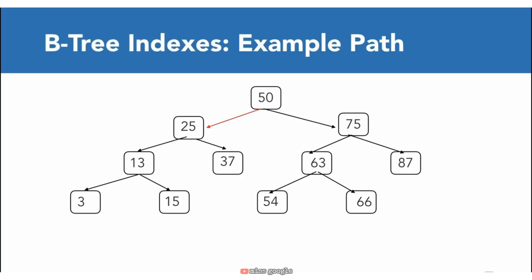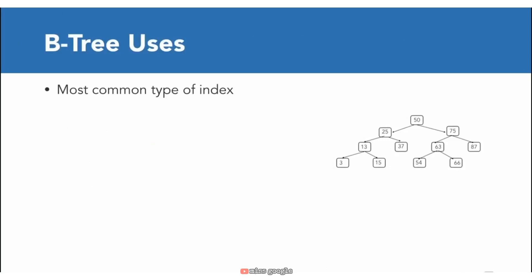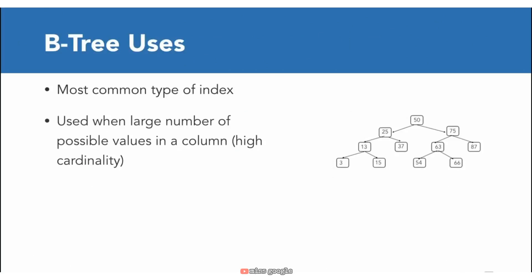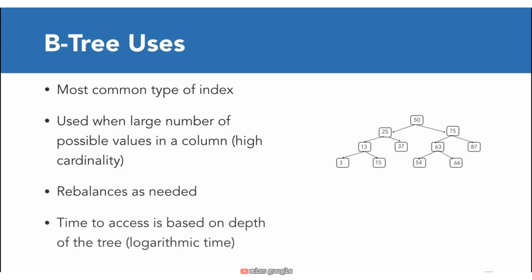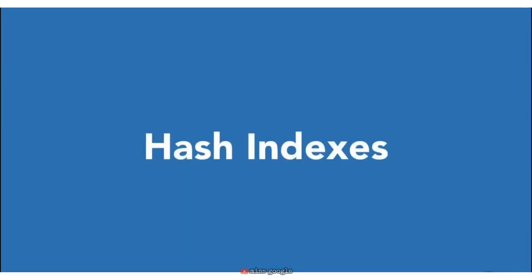To summarize B-trees: they are the most commonly used type of index, used when there is a large number of distinct values in a column — called high cardinality. B-trees rebalance as needed to keep the depth about the same for all paths, preventing a lopsided tree that would be fast on one side and slower on the other. Anytime you look up a value in a B-tree index, you can expect it to take time proportional to O(log n), where n is the number of nodes.